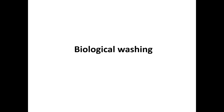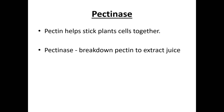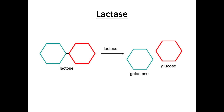Biological washing powders contain enzymes: proteases break down protein stains, lipases break down fats, amylase breaks down starch, and cellulases break down cellulose fiber. Pectinase breaks down pectin, which holds plant cells together, to extract juice. Lactase breaks down lactose into glucose. Lactose is a milk sugar that can cause allergy because some people don't produce enough lactase enzyme, and as age increases, less lactase is produced.